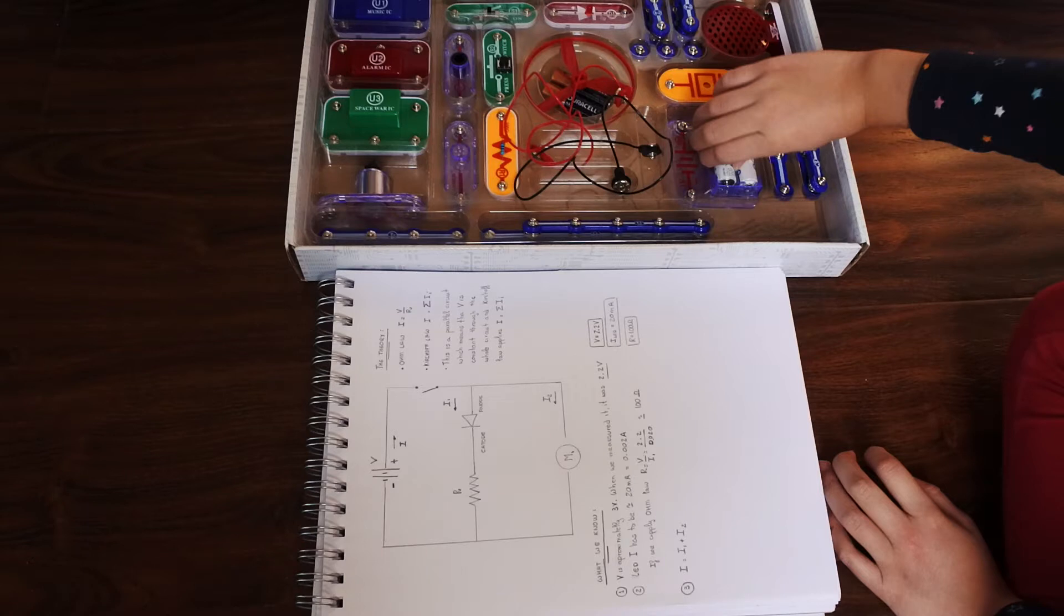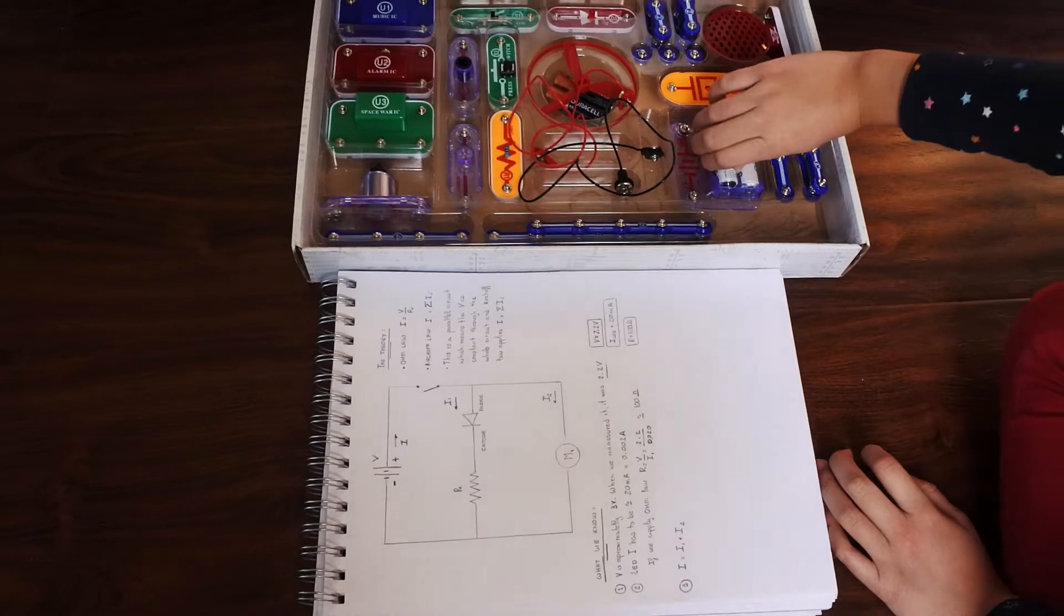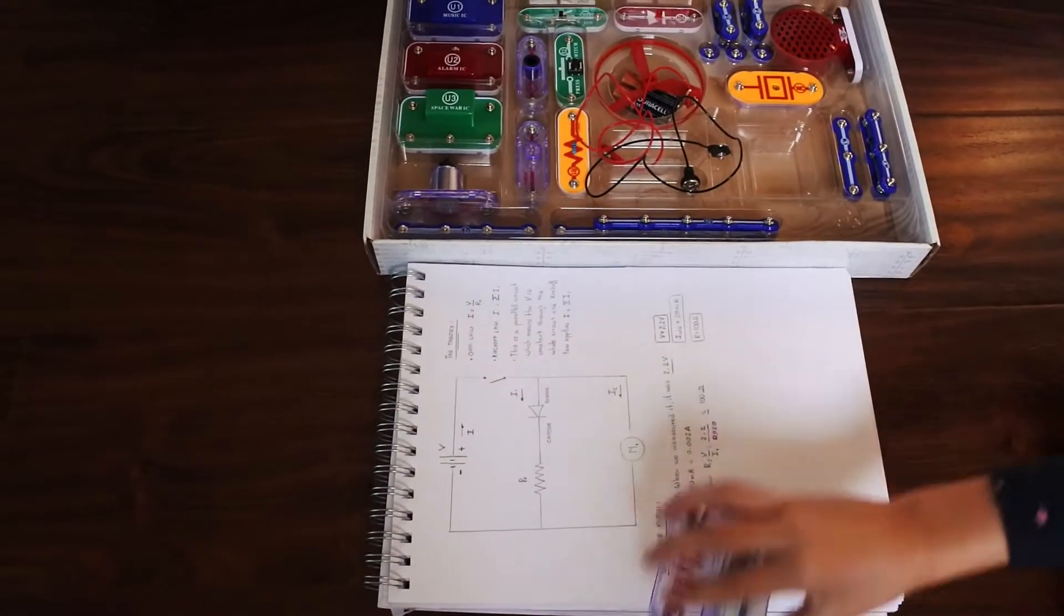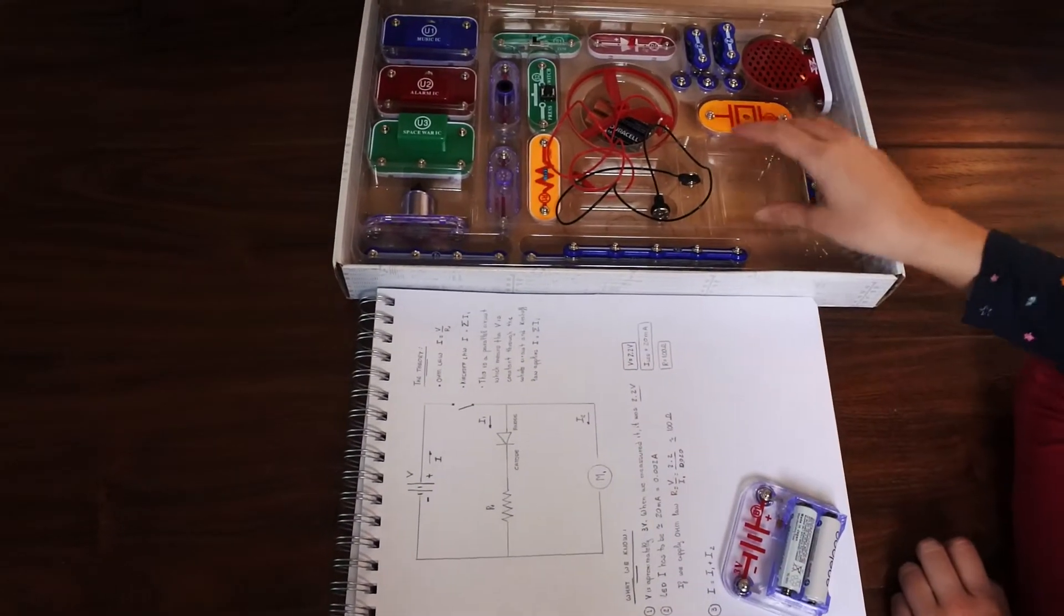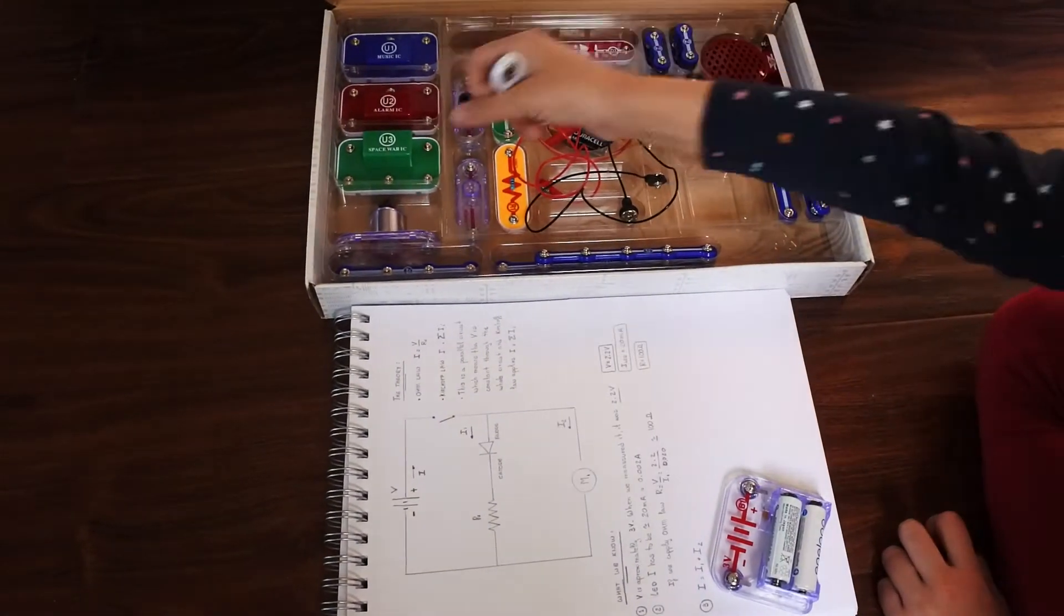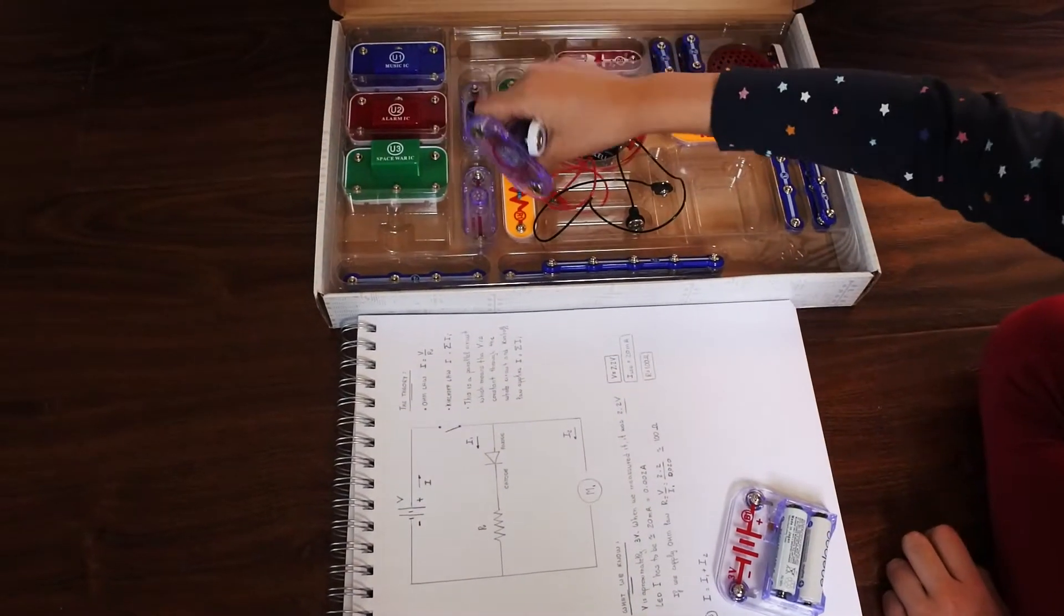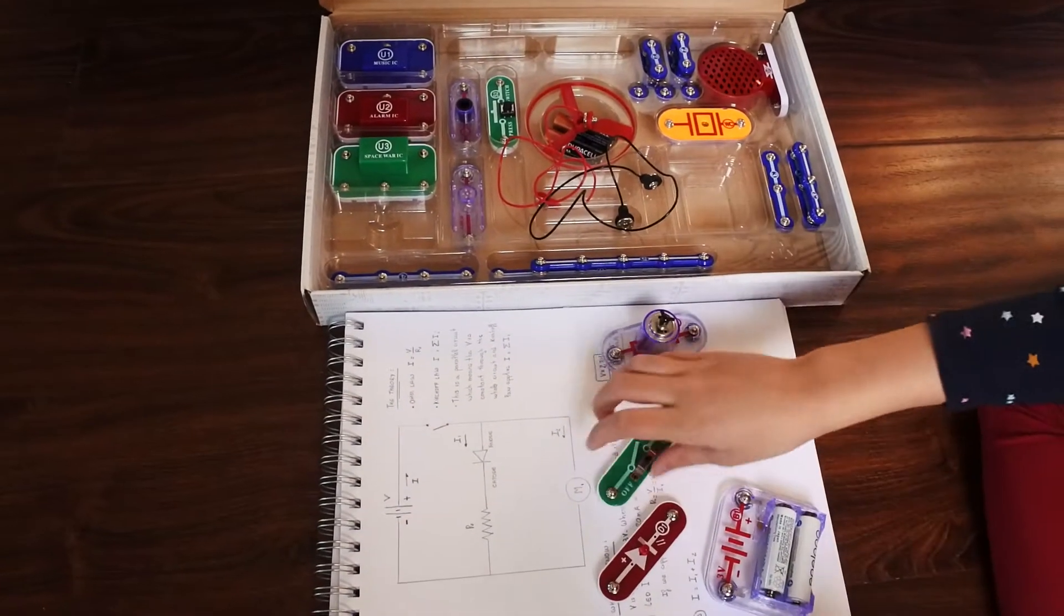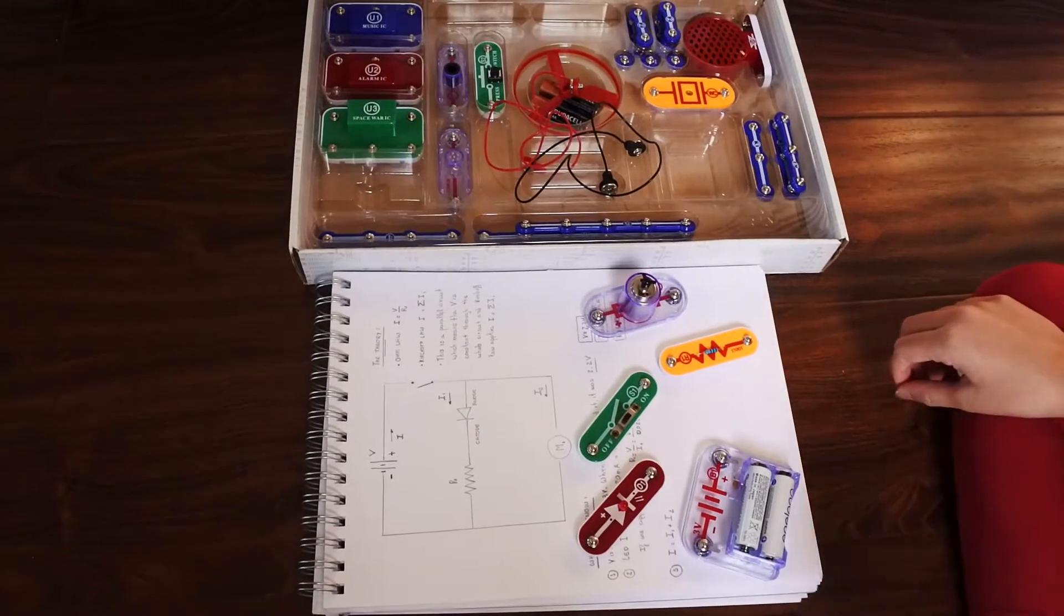After explaining to her what each symbol means, we will let her make the circuit using a snap circuits board. Let's start then. We want her to understand the symbols and connect the components together on her own. We place the snap circuit board next to the circuit diagram and let her pick the components shown in the diagram. She puts them aside before snapping them in place.